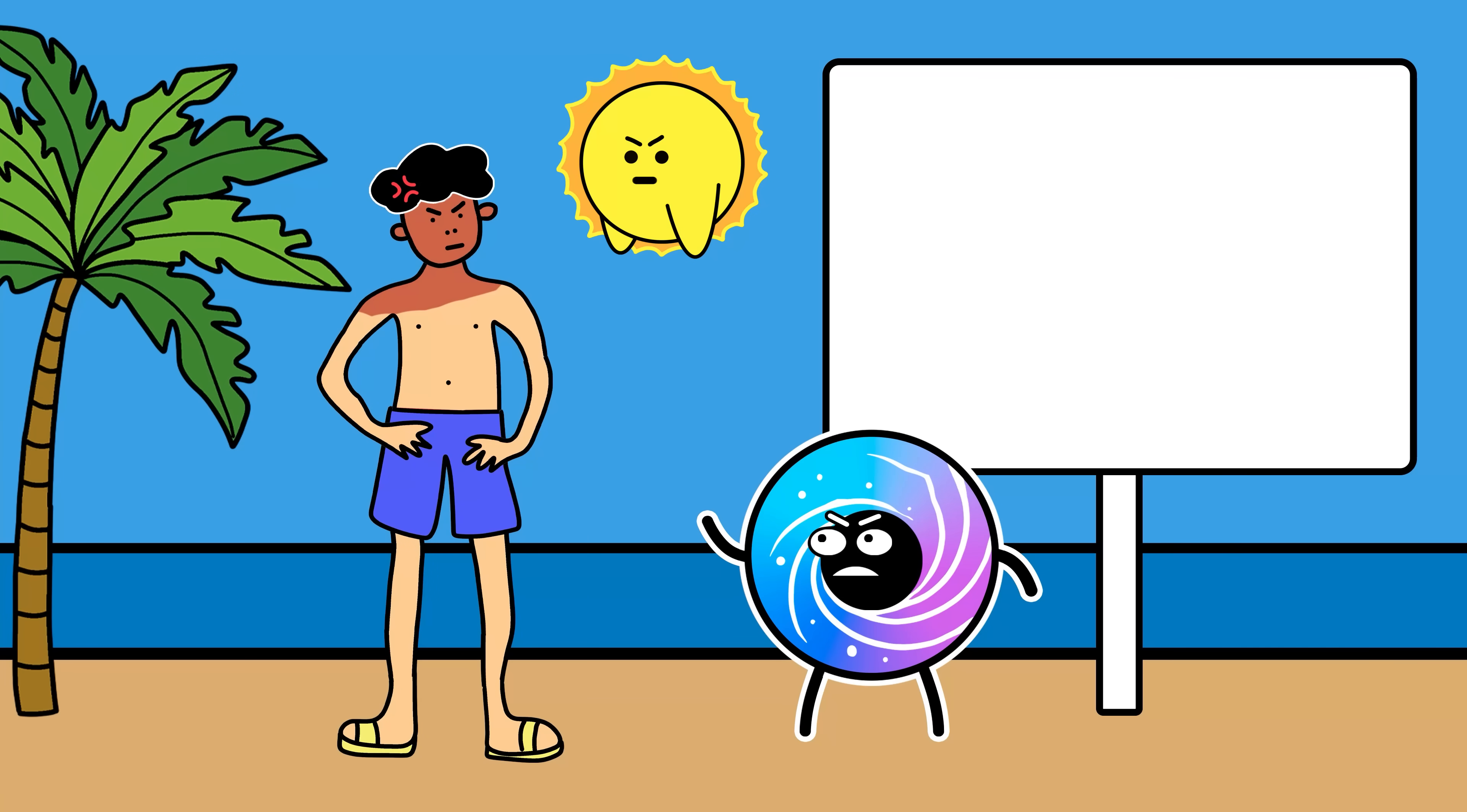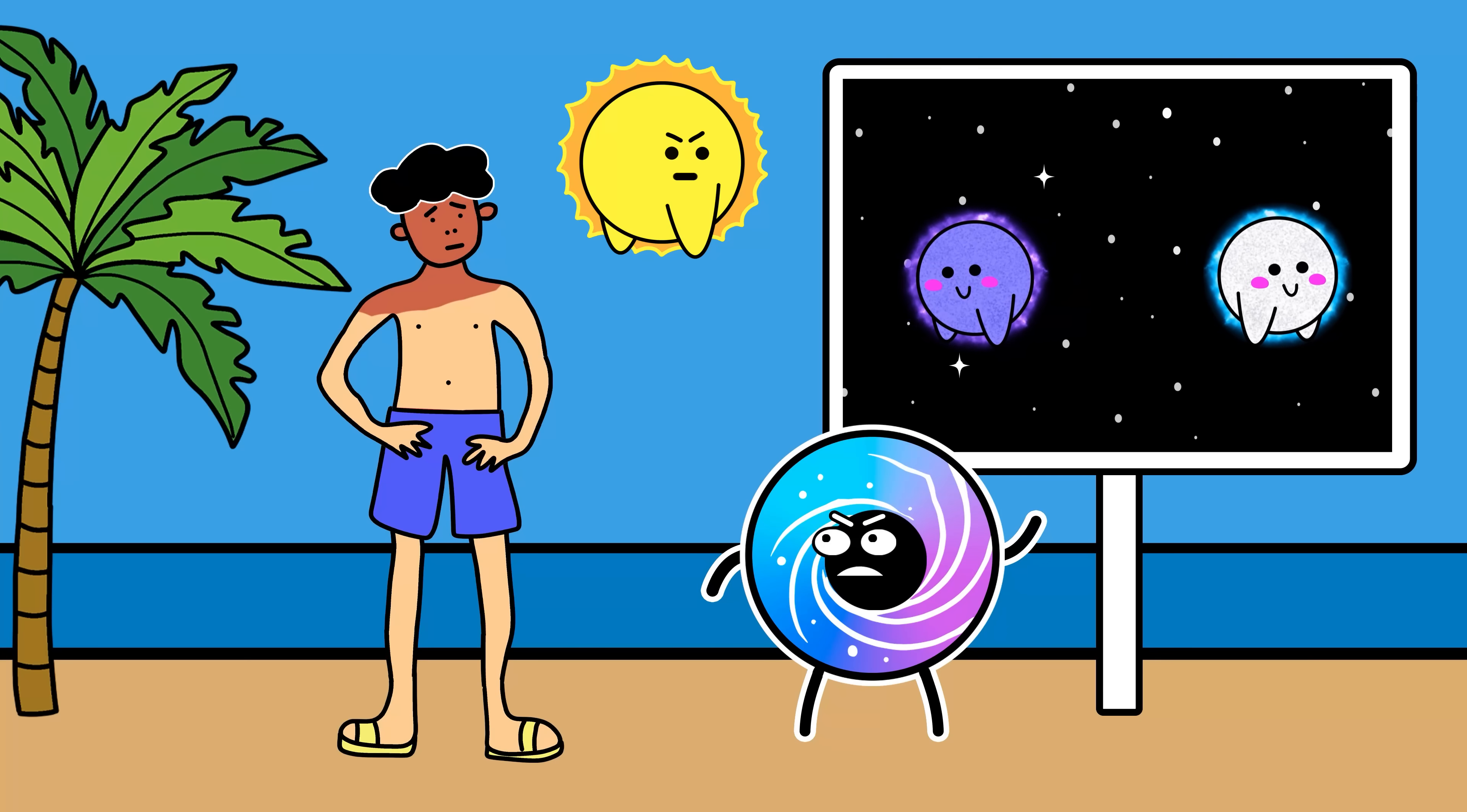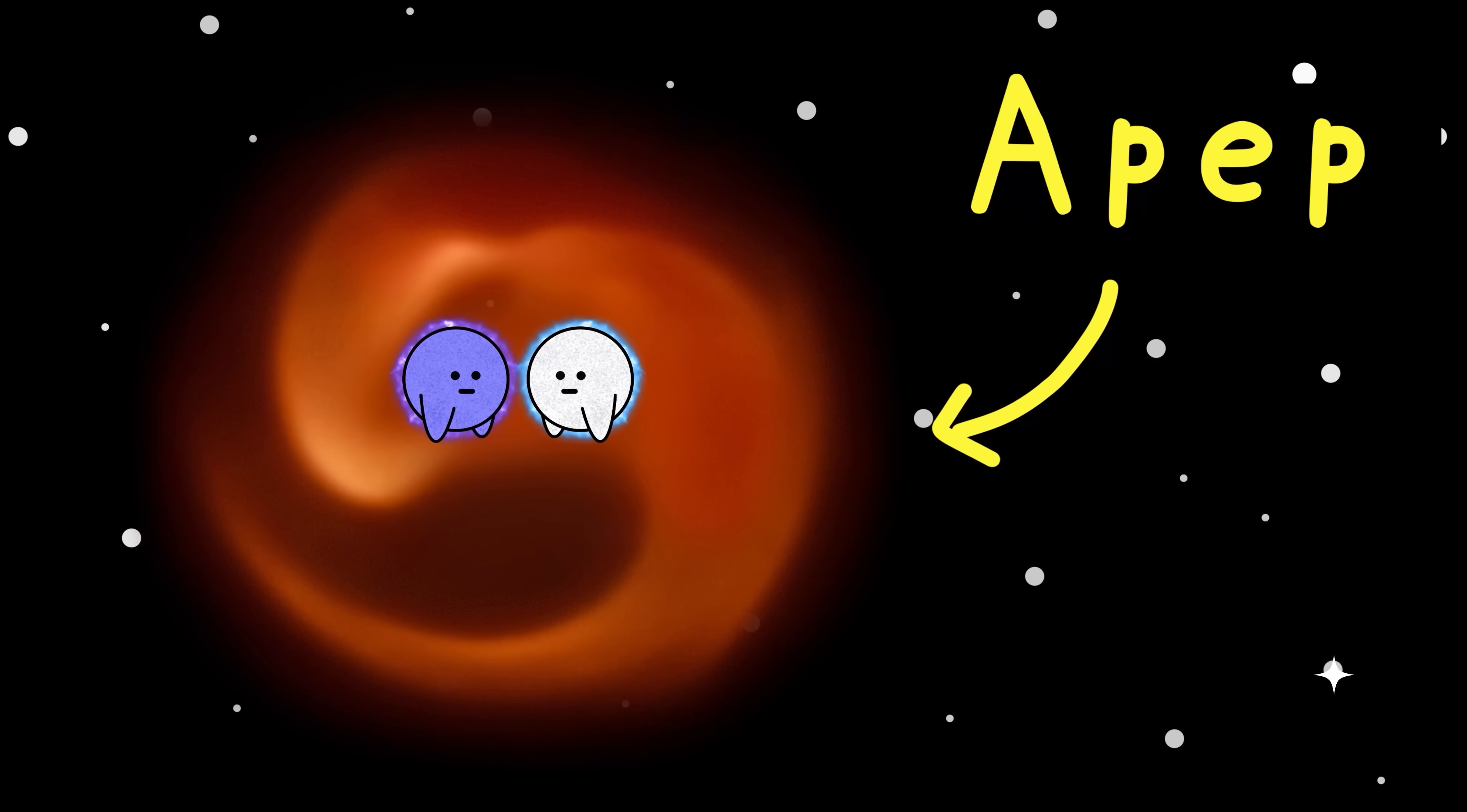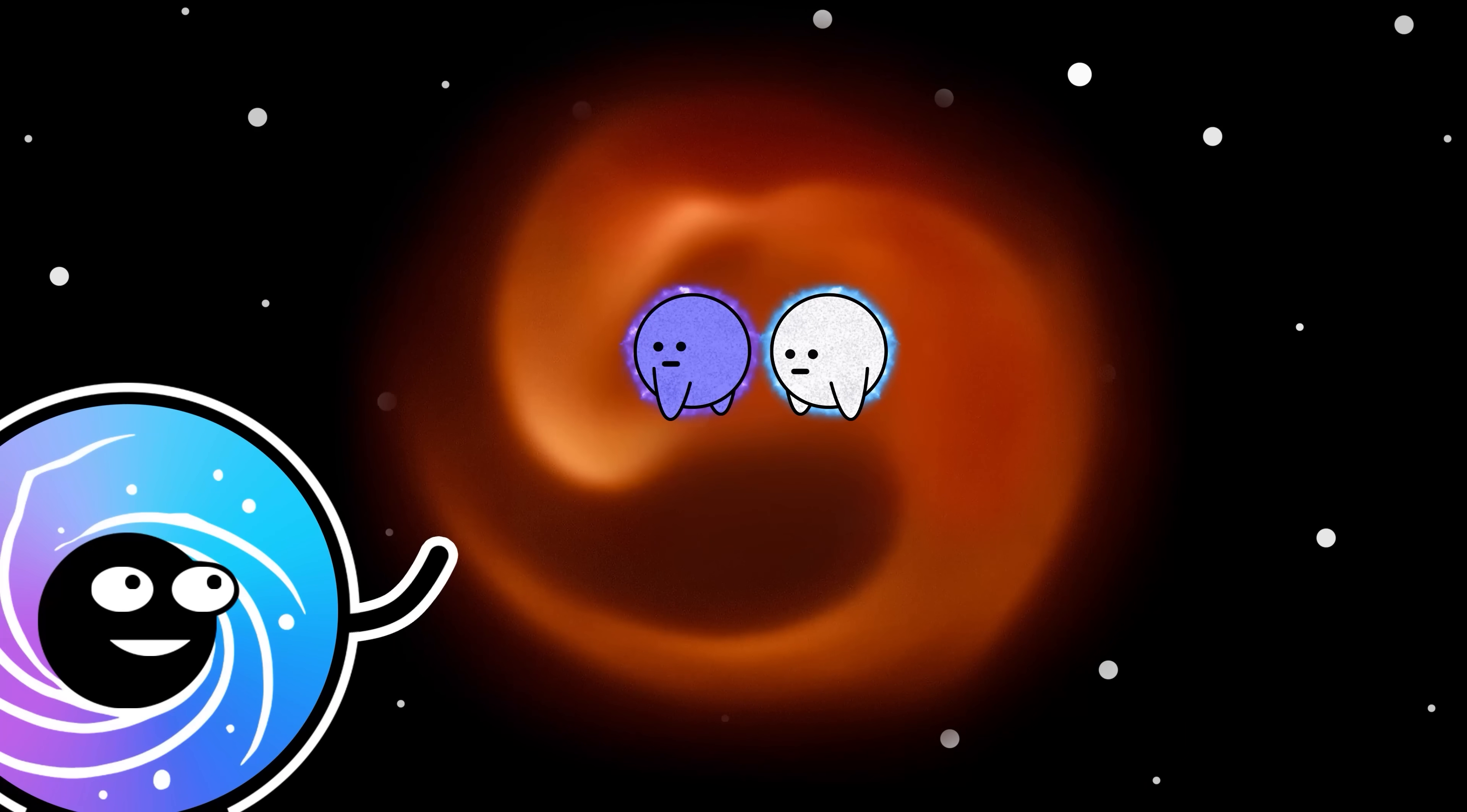And to double down on this lesson, I will now swap the sun with the only known binary system in the universe that has two Wolf-Rayet stars orbiting each other. Because two is always better than one. Meet Apep. Yes, named after the Egyptian god of chaos and I guess destruction.